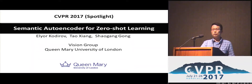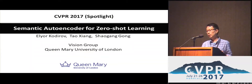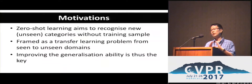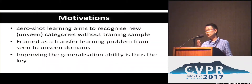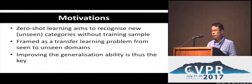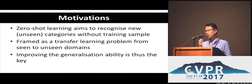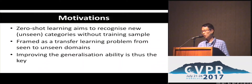The problem we want to solve here is Zero-Shot Learning. The objective of Zero-Shot Learning is to recognize object classes which you don't have any training sample. We can consider Zero-Shot Learning as a transfer learning problem. However, you don't have any training sample in the target domain, so you cannot use the conventional transfer learning method. The only thing you can do is to improve the generalization ability of your model from the source domain only.